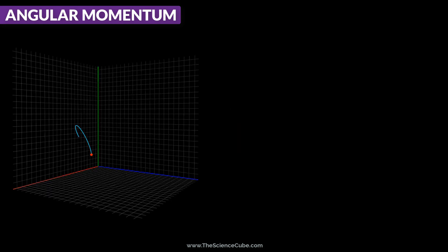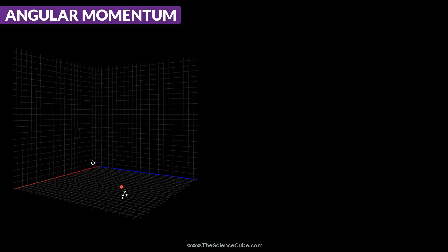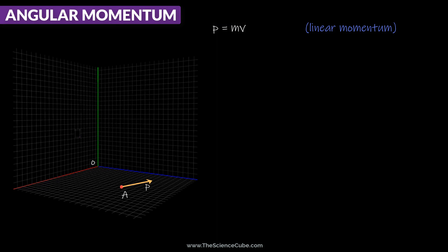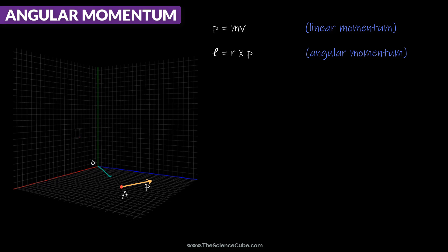Consider this particle with mass m moving through point A in the xy plane with velocity v. We can say that its linear momentum p is equal to the product of mass and velocity at that point. Now the angular momentum, often labeled as L, of this particle with respect to the origin O is the cross product of position vector r and the linear momentum p. Since it is a cross product, the angular momentum becomes a vector quantity.